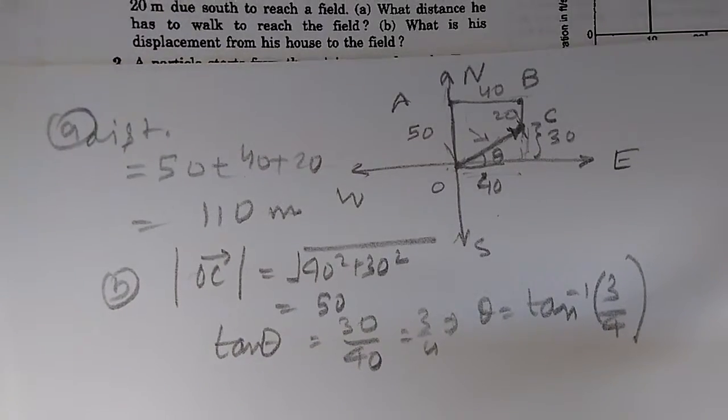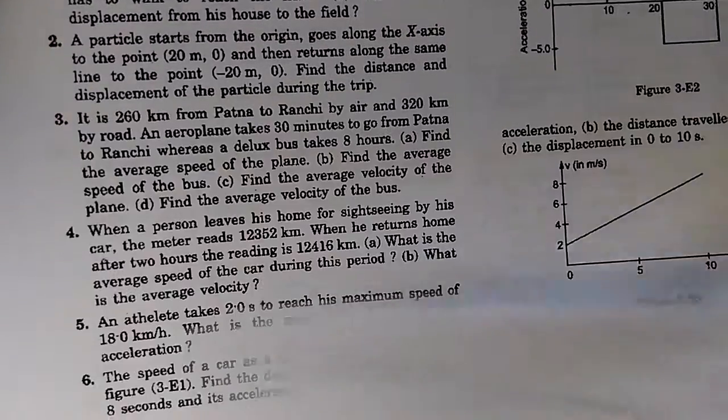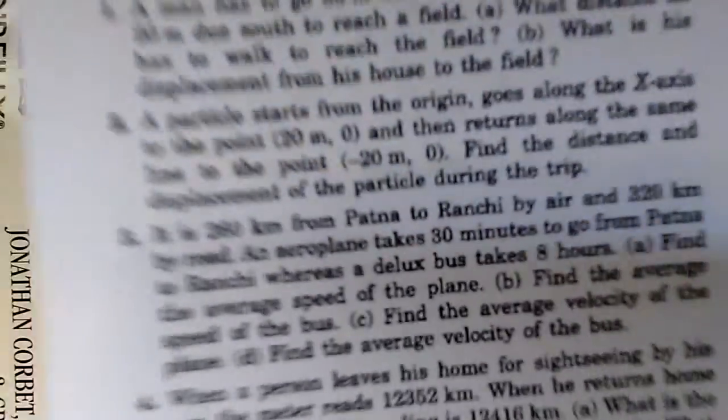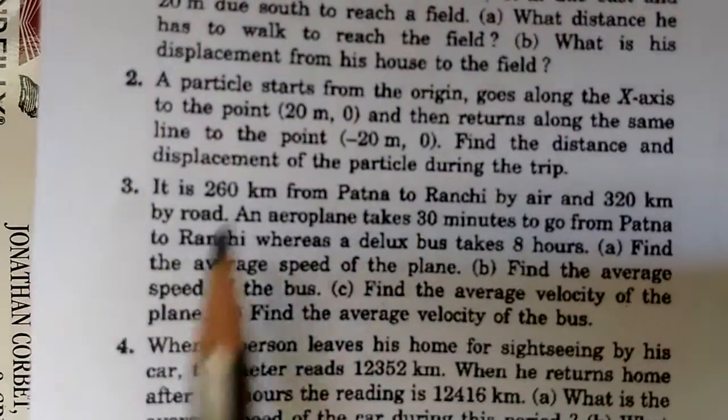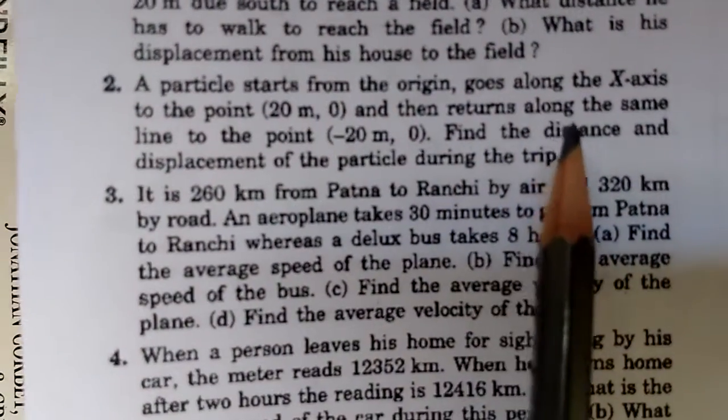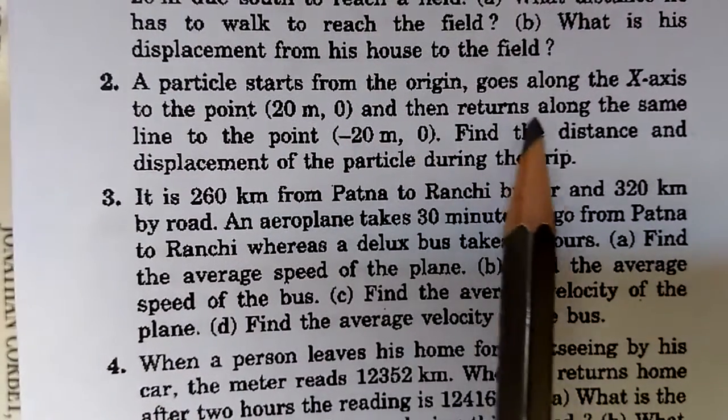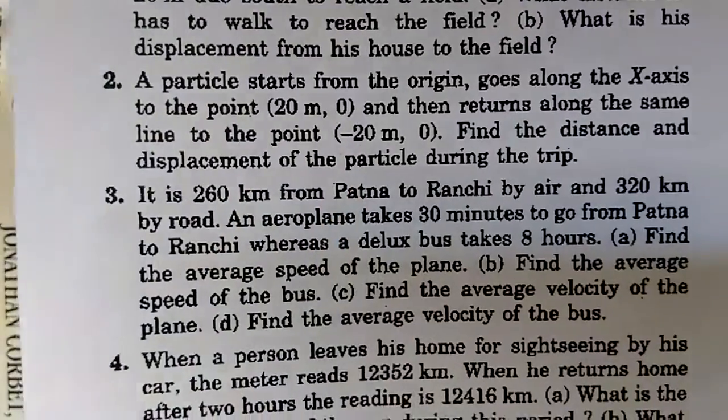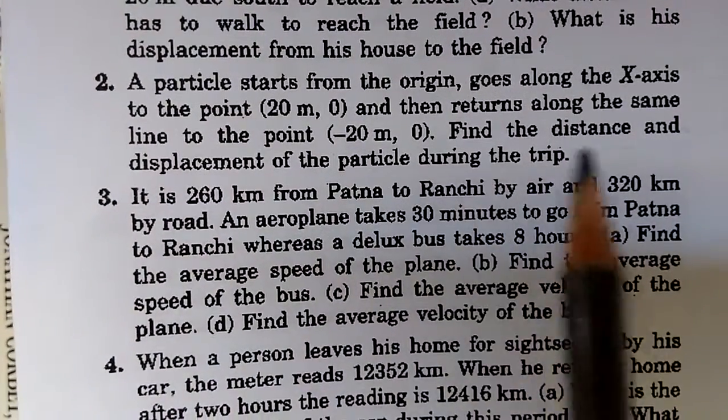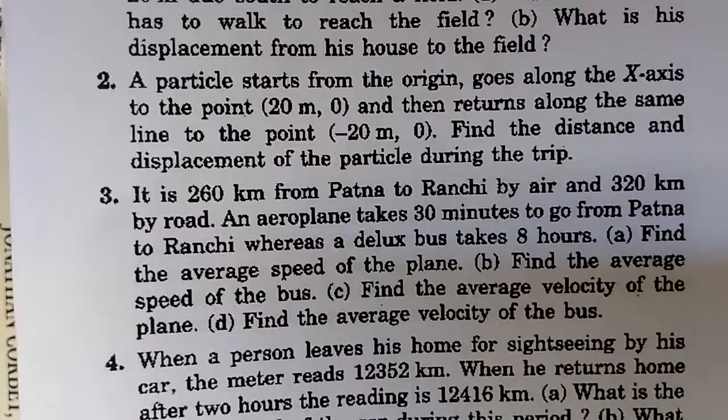Simple problem, so let's move on to problem number 2 and cover it in this itself. Question number 2 asks: A particle starts from the origin, goes along the x-axis to 20 and 0, and then returns along the same line to the point minus 20 and 0, the left hand side. Find the distance and displacement of the particle during the trip.